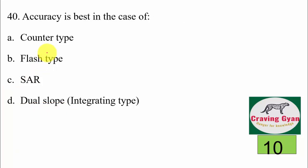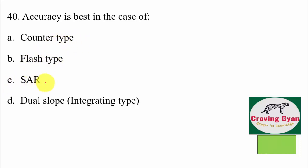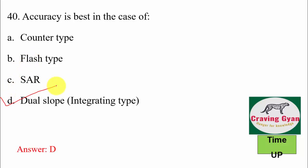40th question: accuracy is best in — counter type, flash type, SAR type, or dual slope? Accuracy is best in the case of dual slope. Hence option D is correct.